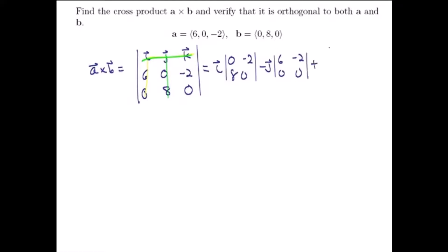And then plus the standard basis vector K, that's our entry in the first row, third column, times the determinant of the 2 by 2 that we get if we block out the row and column that K is in. That's the lower left 2 by 2 matrix. The determinant of that, then, is the determinant of 6, 0, 0, 8.